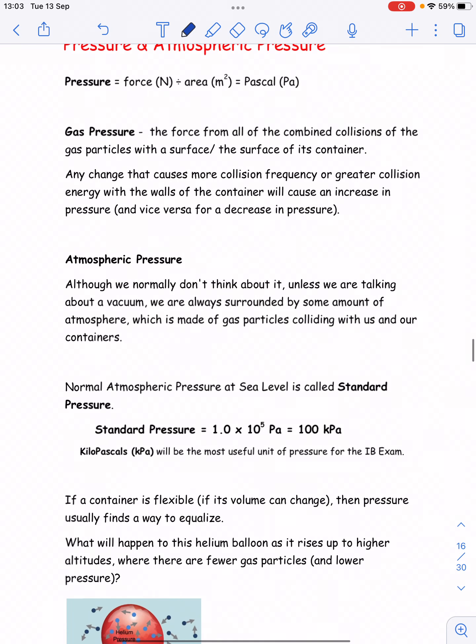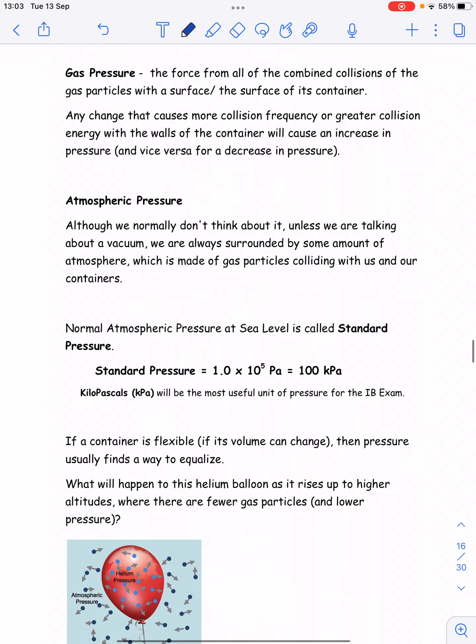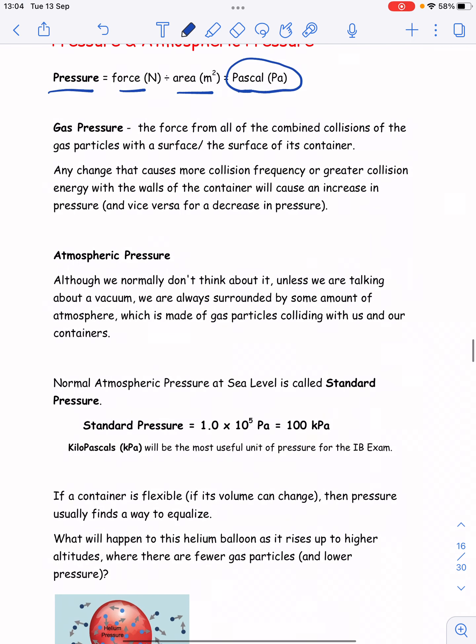And that's where we get gas pressure. So pressure is force divided by area. Now the unit of force in physics is Newton and the unit of area is the meter squared. So if we take a Newton and we divide it by a meter squared, then we get a unit of pressure called the Pascal. Symbol is Pa. Now it's a pretty small unit of pressure. And so actually we're mostly going to use the unit of the kilopascal, which is equal to a thousand Pascals.